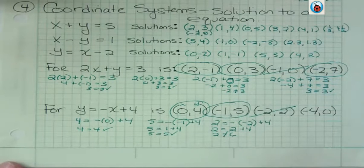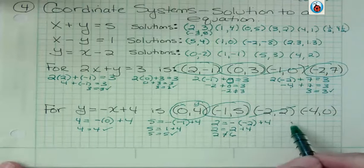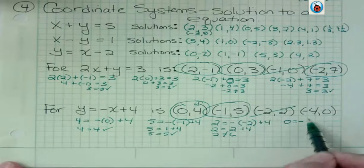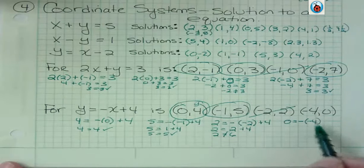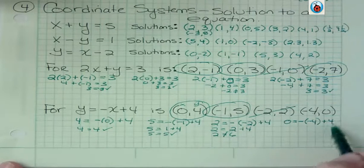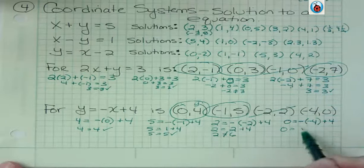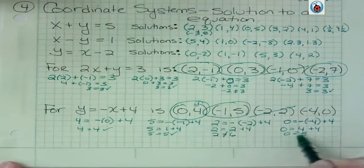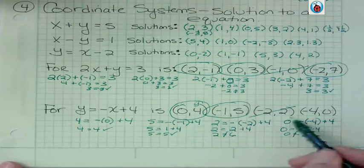What about negative 4, 0? Well, y is 0. X is negative 4, and I had a negative out front, and I have a negative 4, and then negative negative 4 is 4 plus 4. 0 equals 8. No, it does not equal 8. So that's not a solution either.